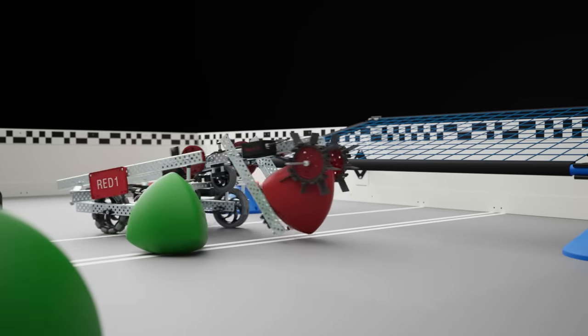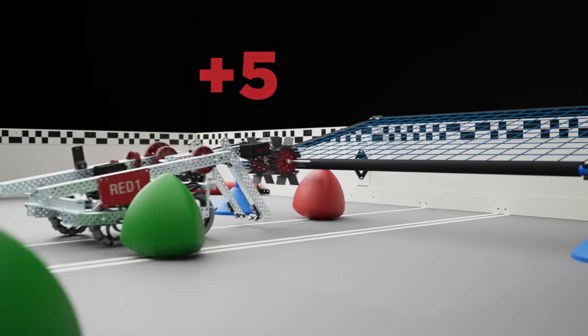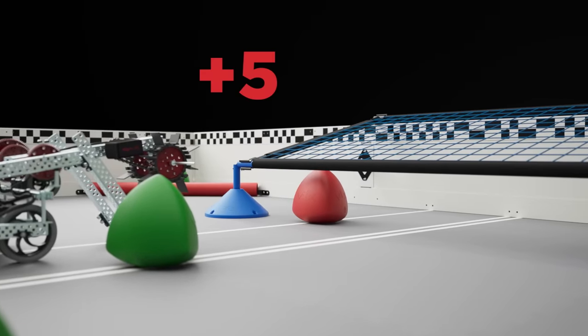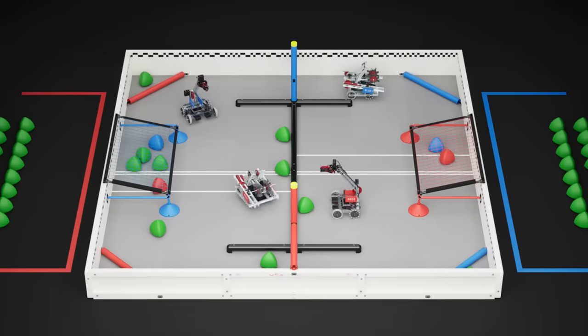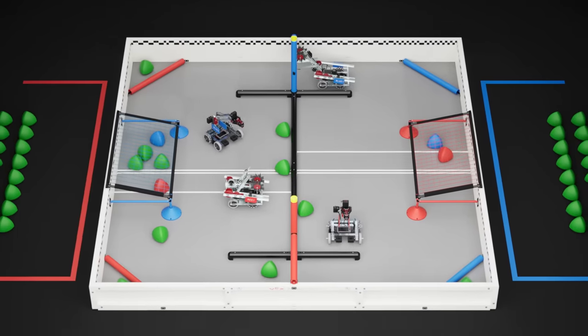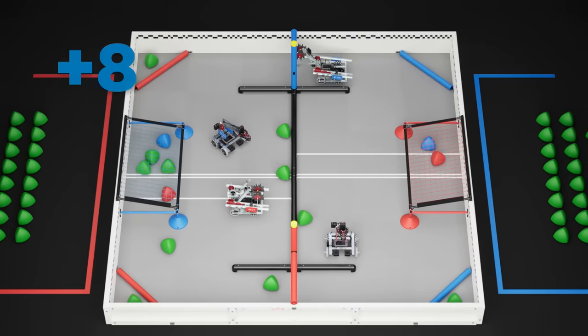This alliance tri-ball always counts towards the same color alliance as the tri-ball, regardless of where it is scored. The alliance who scores the most points during the autonomous period will earn a bonus of eight points.